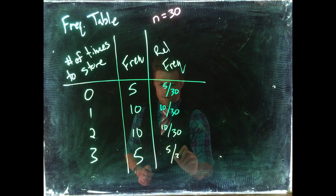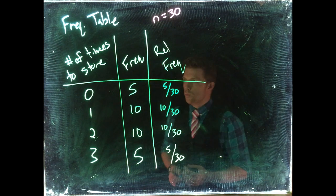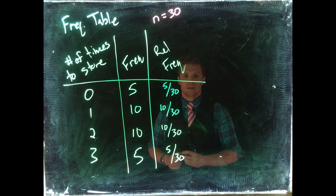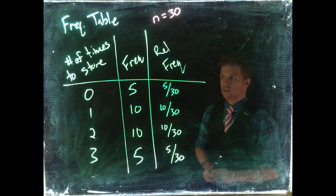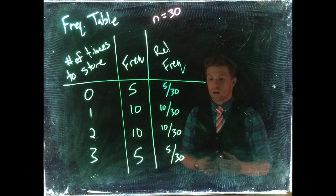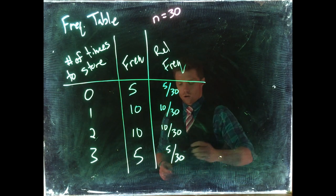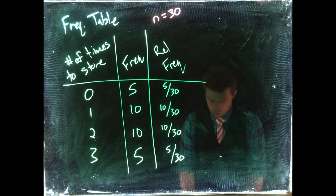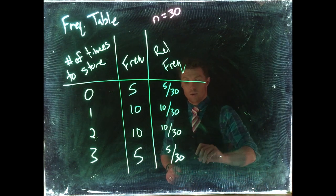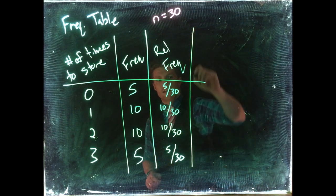Now when we have ordinal data or numerical data, we can also add in two more columns. We don't add these in for nominal data because we actually need some order to the data for them to make sense.